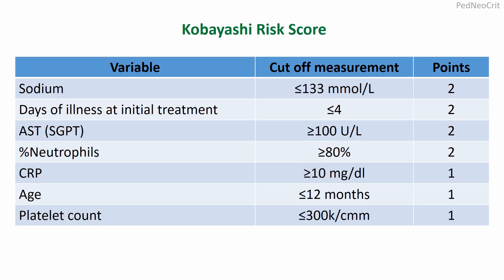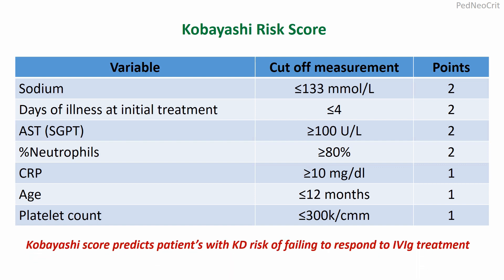This is the Kobayashi score, which is very important because it predicts the failure of IVIG in Kawasaki disease or Kawasaki-like syndrome. Patients who have a higher Kobayashi score may not respond to IVIG and may need additional corticosteroid.